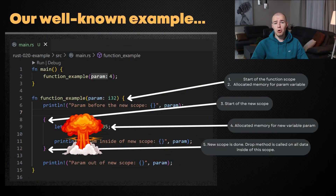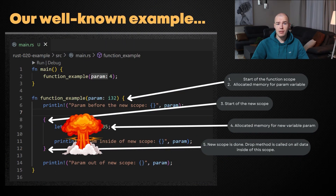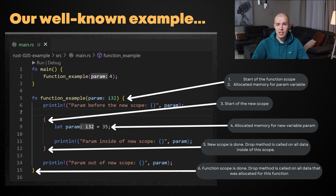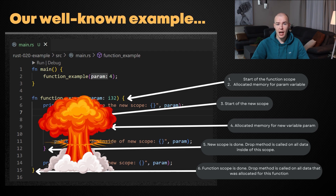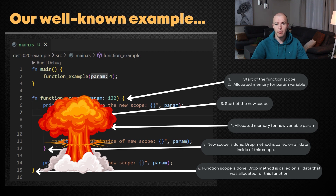Just to complete the story, the final point is point number 6, which is the end of the scope of our example function. After it happens, everything from the example function is being deallocated because its drop methods are being called and the stack memory is going to be clear.